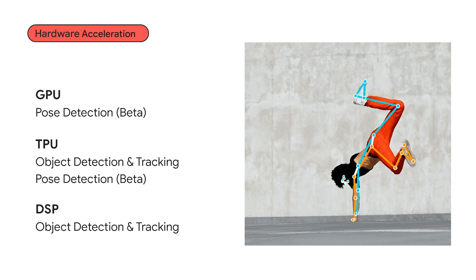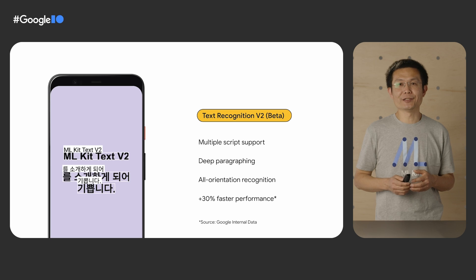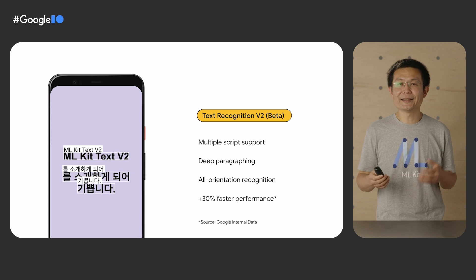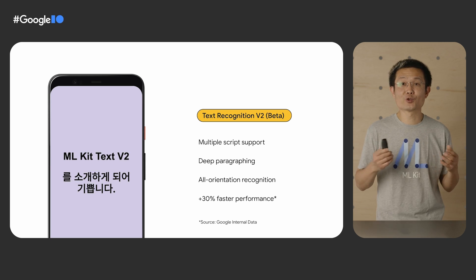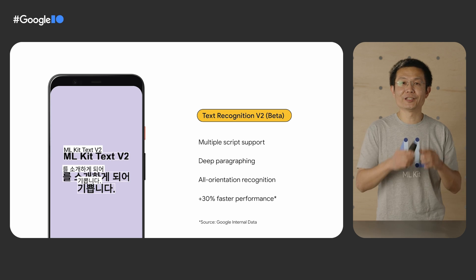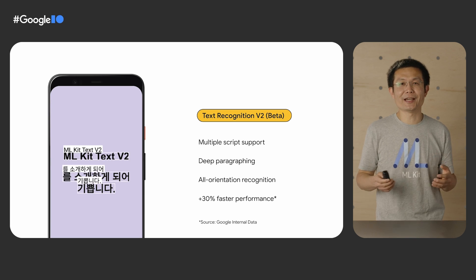Additionally, we enabled DSP acceleration for object detection and tracking on qualified devices. It sped up model inference by three times, while consuming only one-seventh of the energy based on our internal benchmarking. We also made some big updates to text recognition with a beta version of Text Recognition V2. In addition to the Latin script, we added support for Chinese, Devanagari, Japanese, and Korean scripts, dramatically expanding our language coverage. We introduced deep paragraphing technology to provide better structural grouping, and added support for text written in all orientations. Even with all these improvements, we managed to boost recognition accuracy and improve latency by as much as 30% on Android devices.